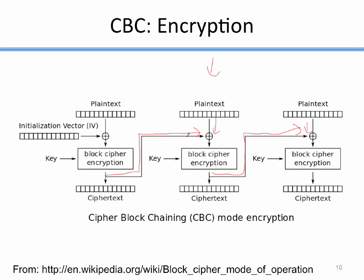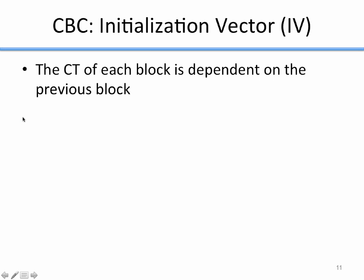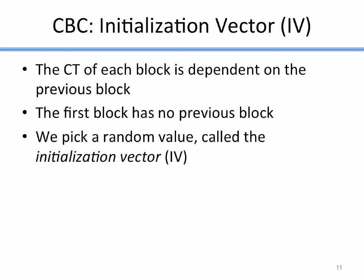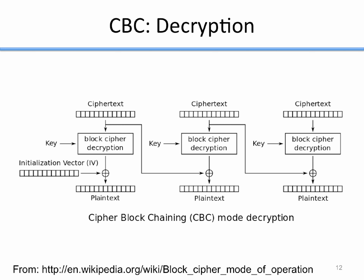Not every block has a previous block — the first block doesn't. So we include something called an Initial Vector. We pick a random value — chosen so it's not predictable, though even if it is predictable it doesn't really matter — and use it in place of the previous ciphertext for the first block. The initial vector is not a secret and can be sent along with the data. For decryption, we take the ciphertext, run it through the decryption operation, then XOR with the initial vector or the previous ciphertext to get back the original plaintext.